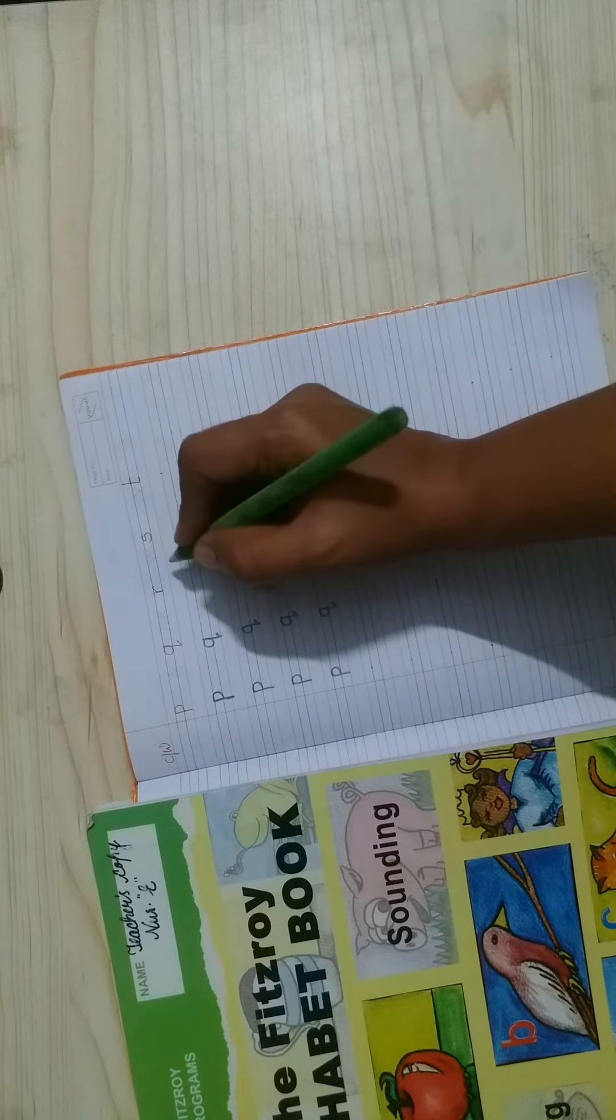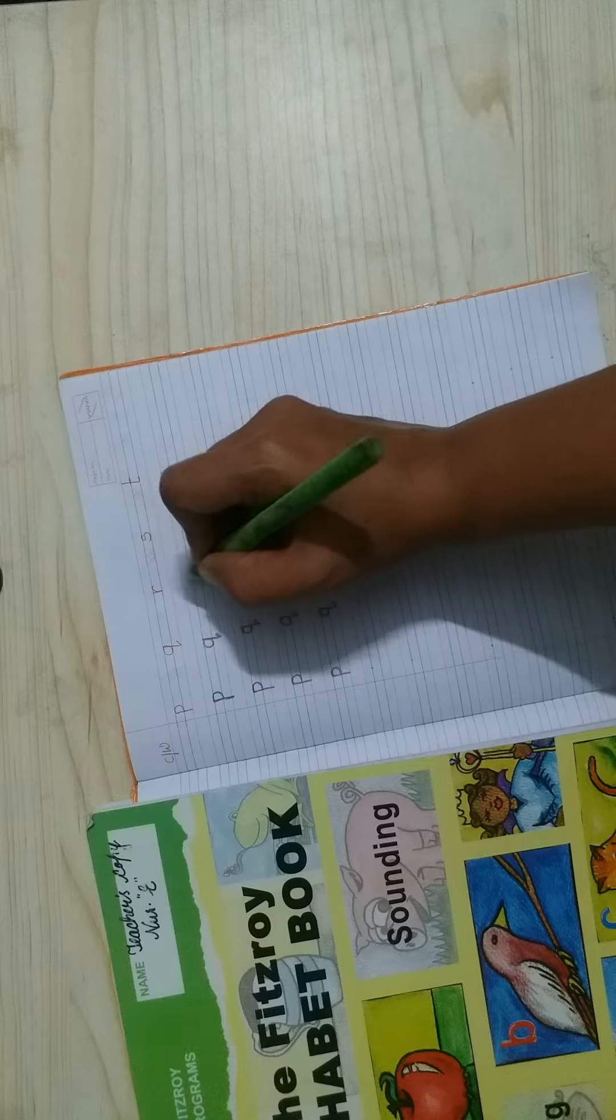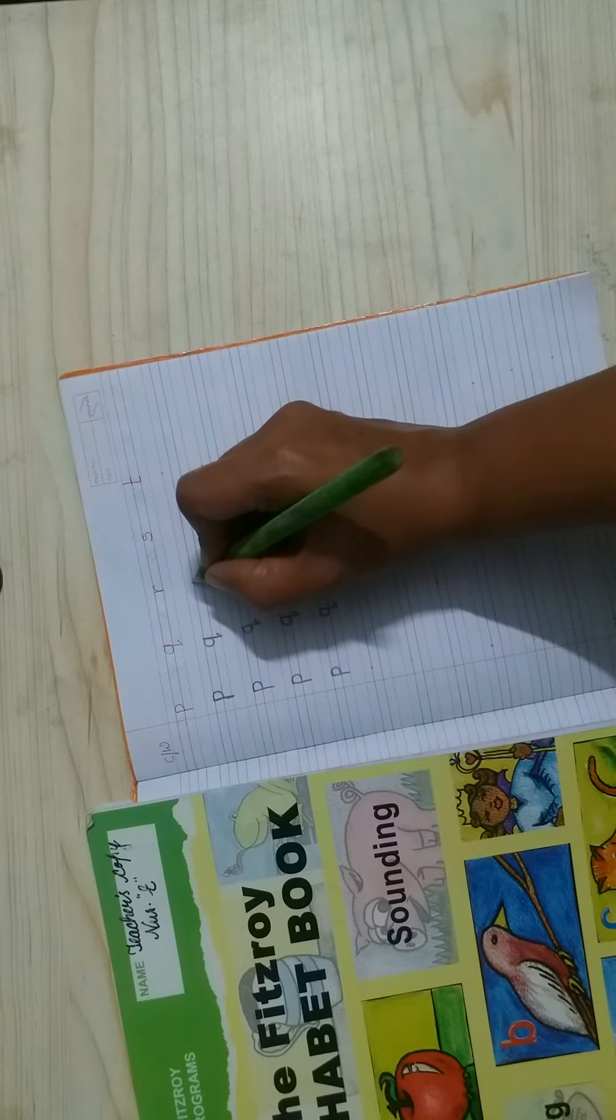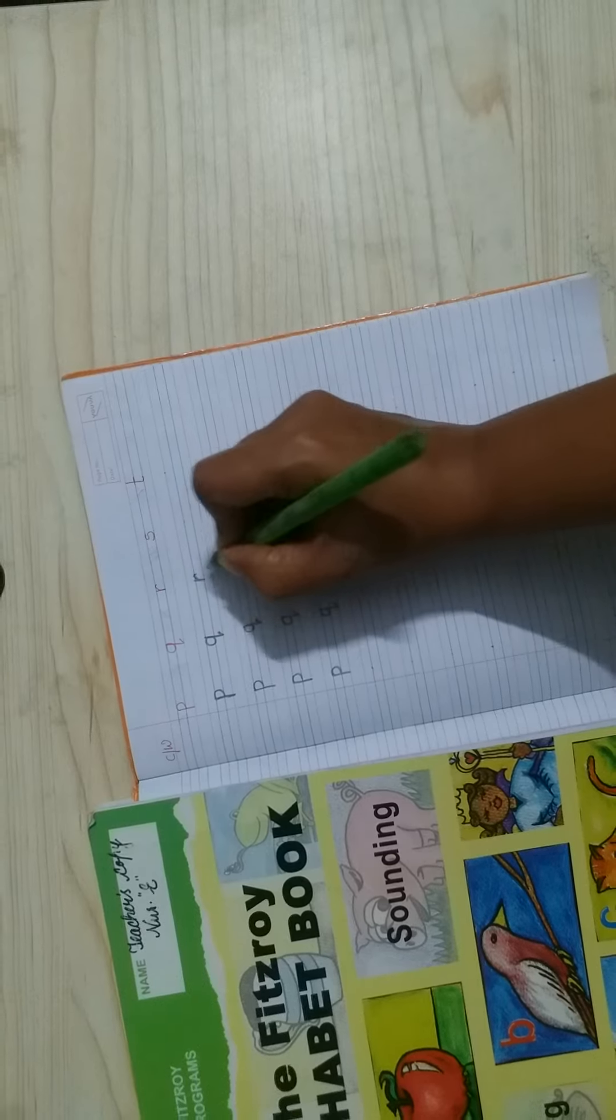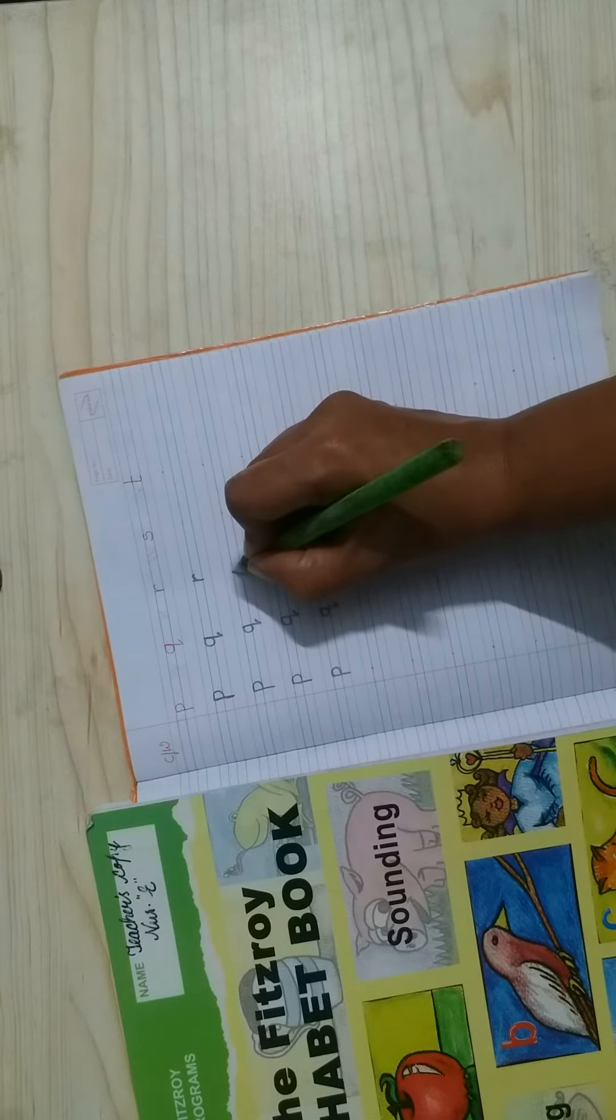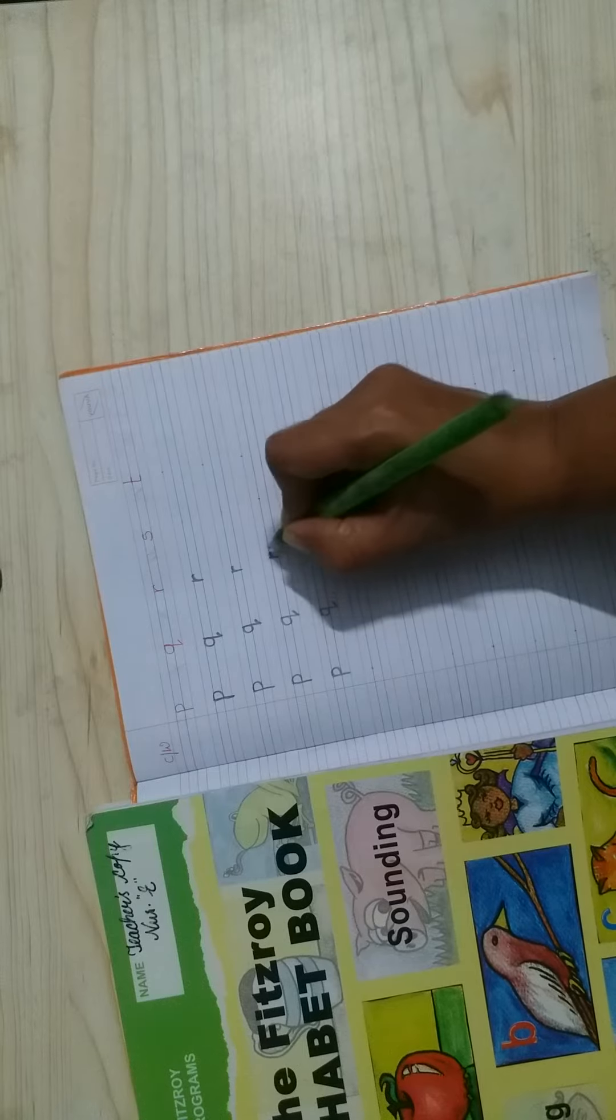Now, next, r. This is the small r and you have to do practice like this. Make standing and curve. Standing and then curve. Standing and then curve.